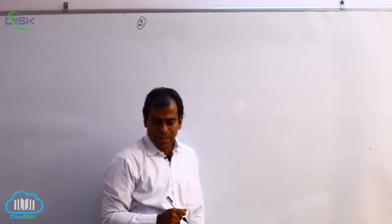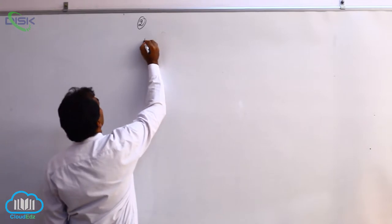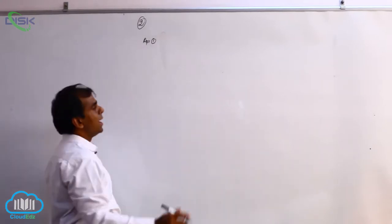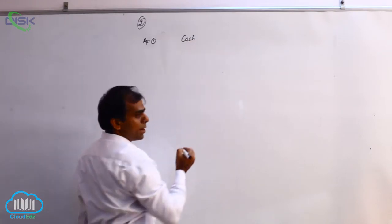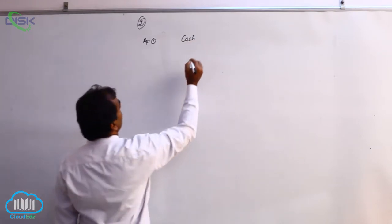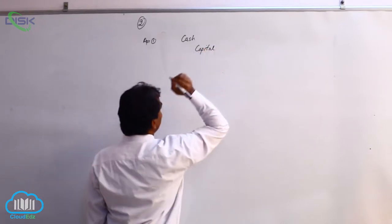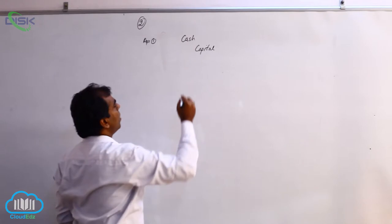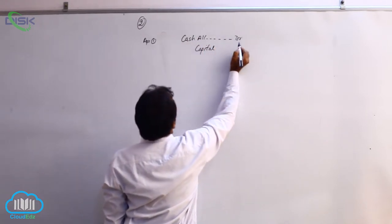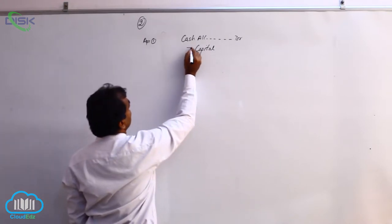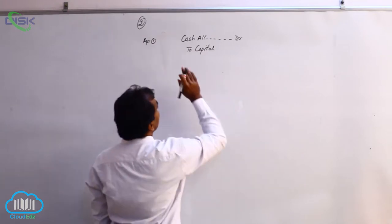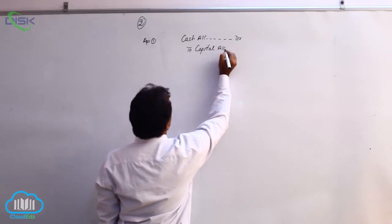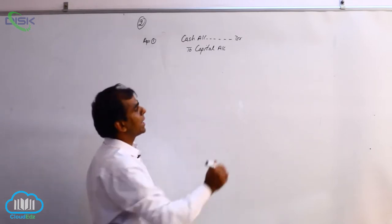We are going to discuss the second problem. The first transaction is on April 1st — commenced business with cash, meaning the starting of business. The accounts affected are cash and the owner. When the owner gives money to the business, we refer to the owner as capital. Cash is coming in, so real account rule applies: debit what comes in — cash account debit. The owner, represented as capital, is a personal account, so personal account rule says credit the giver.